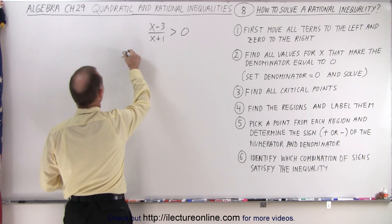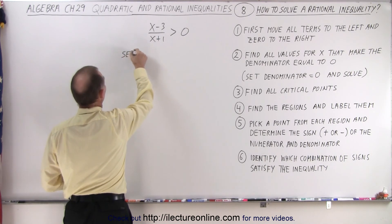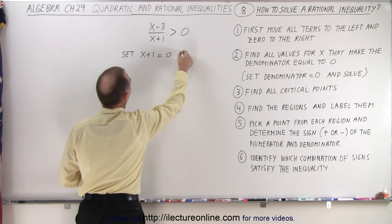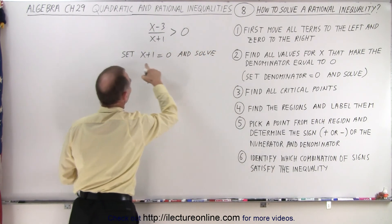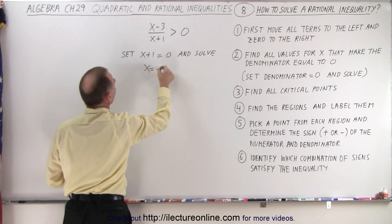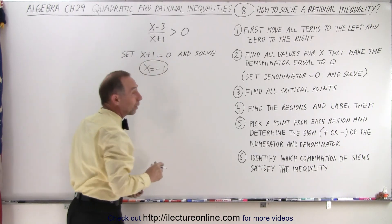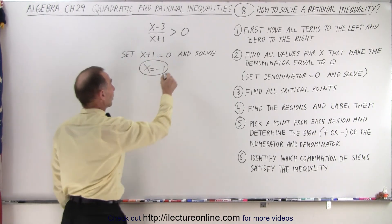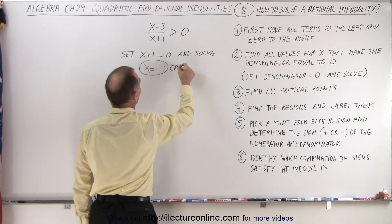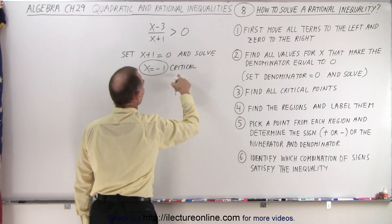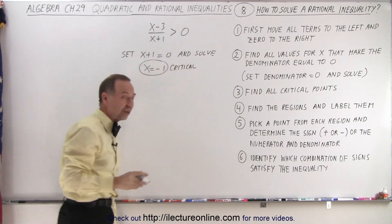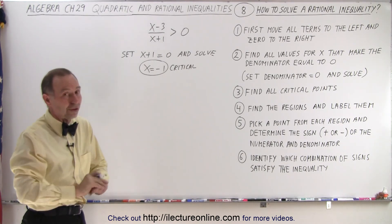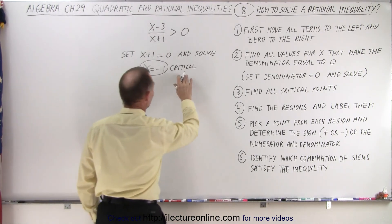So we're going to set x plus one, which is the denominator, equal to zero and solve. That means x equals negative one, and that becomes one of our critical points. That is a critical point, but the critical point we find by setting the denominator equal to zero cannot be part of the solution because the denominator can never be equal to zero.